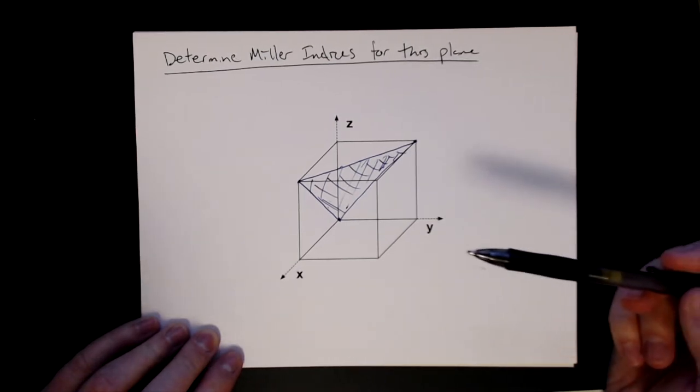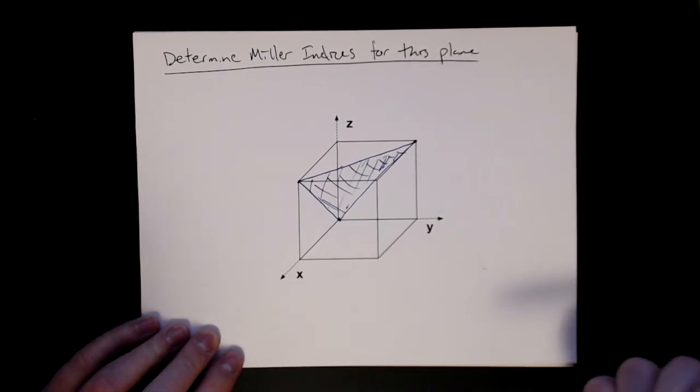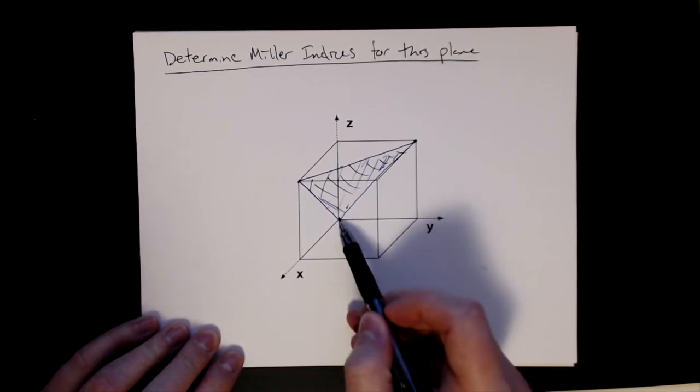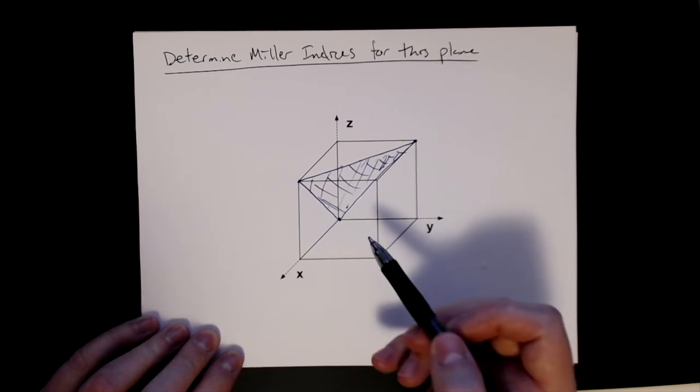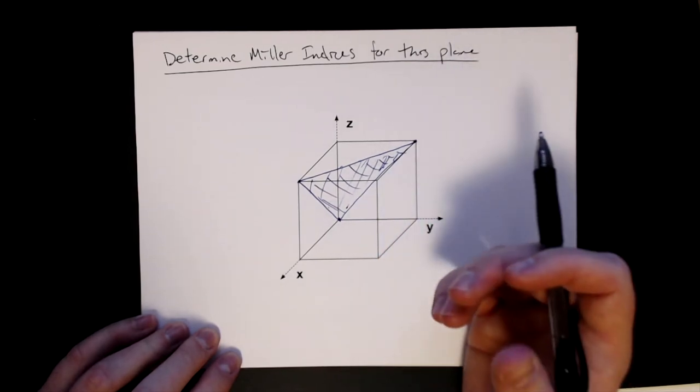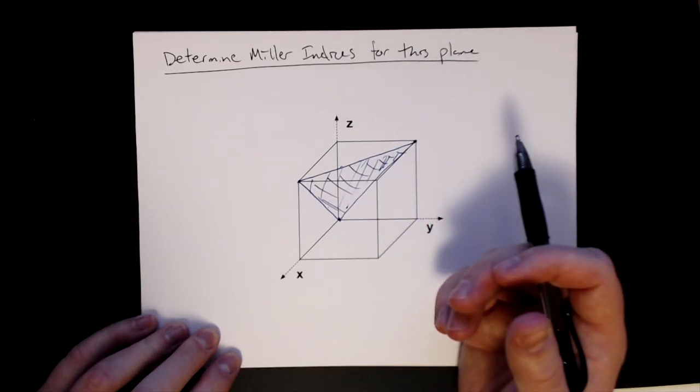We're always going to start with the same procedure. Step one is if it goes through the origin, we're going to move it. Sure enough, it goes through the origin here. So I need to pick either, again, redraw this plane or reposition the origin of the unit cell.